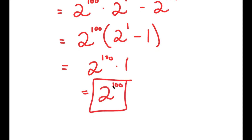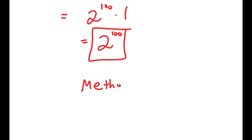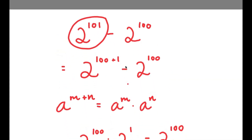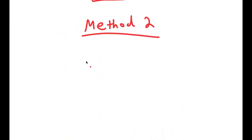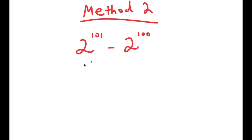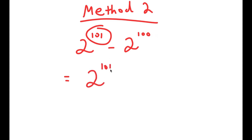Now there is actually another method of solving this problem. Going back to the problem, I have 2 to the power of 101 minus 2 to the power of 100. Before I rewrote 101 as 100 + 1, but how about I rewrite 100 as 101 minus 1. So now I get 2 to the power of 101 minus 2 to the power of (101 - 1).